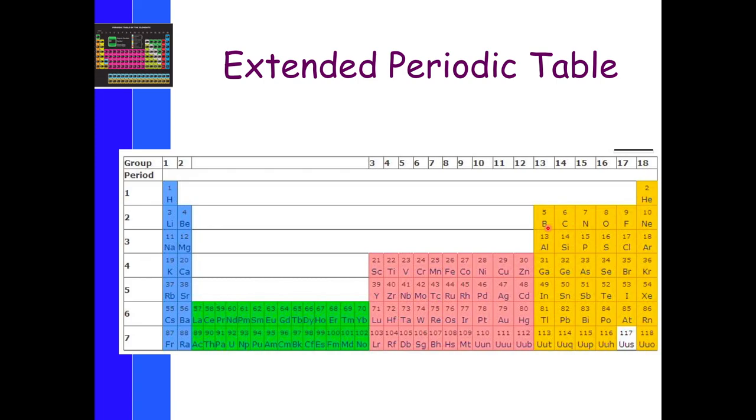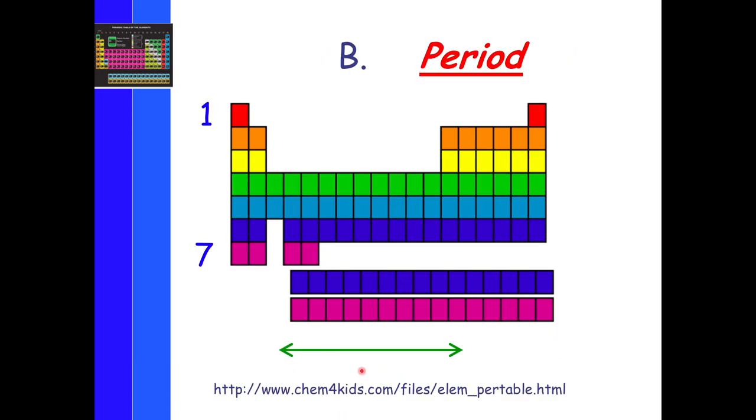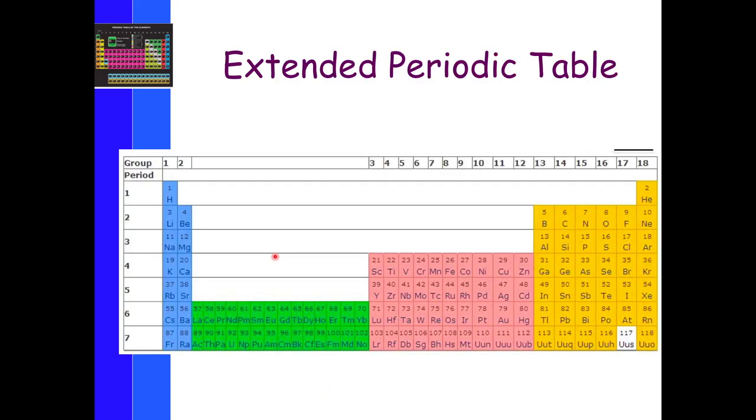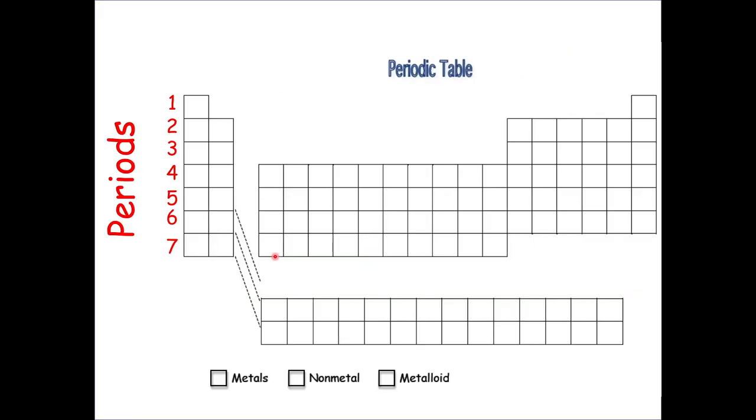So this is actually what the periodic table should look like. It is normally too big to fit on a piece of paper. So that's why we cut them off. We take this F block right here. And then we insert it down underneath, like in this picture. But this row is supposed to be right here. And then this row is supposed to be right here. So just letting you guys know. That's what it's supposed to be like.